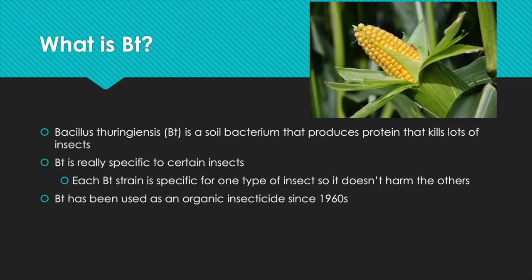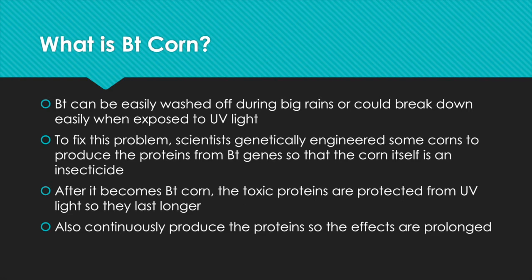BT corn. First off, what is BT? Bacillus thuringiensis is a soil bacterium that produces a protein that kills lots of insects. It is really specific to certain insects and has been used as an organic insecticide since the 1960s.